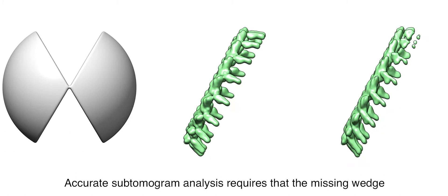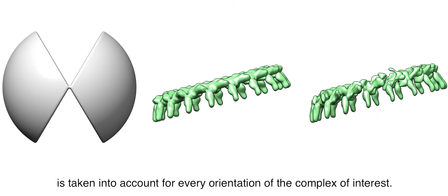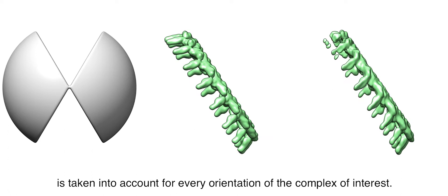Accurate subtomogram analysis requires that the missing wedge is taken into account for every orientation of the complex of interest.